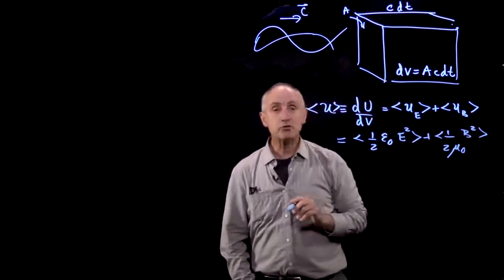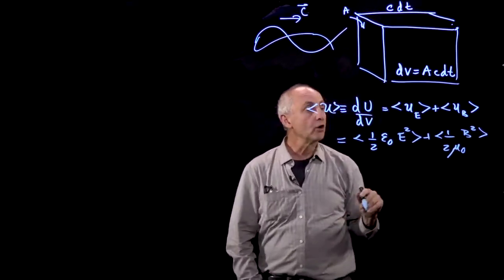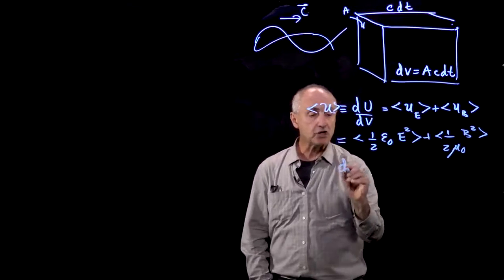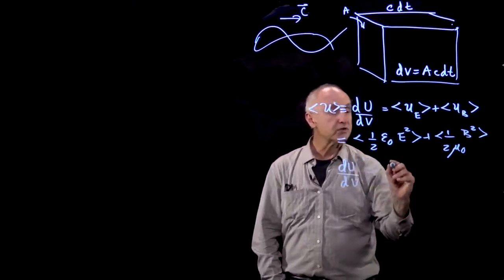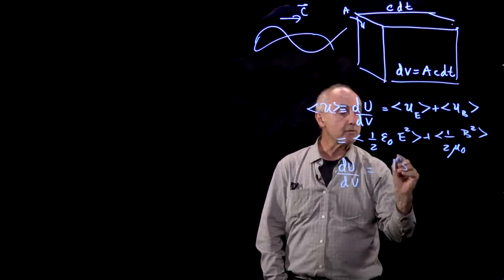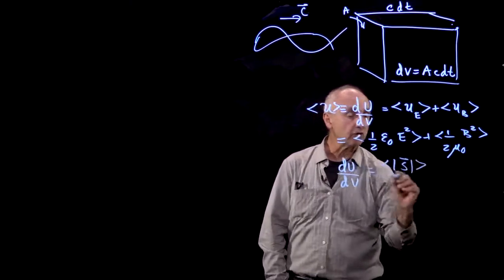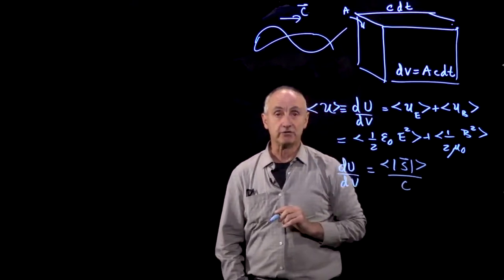Now, when we used our plane electromagnetic wave, we showed that this energy per volume of space was equal to the time average magnitude of the Poynting vector divided by the speed of light.